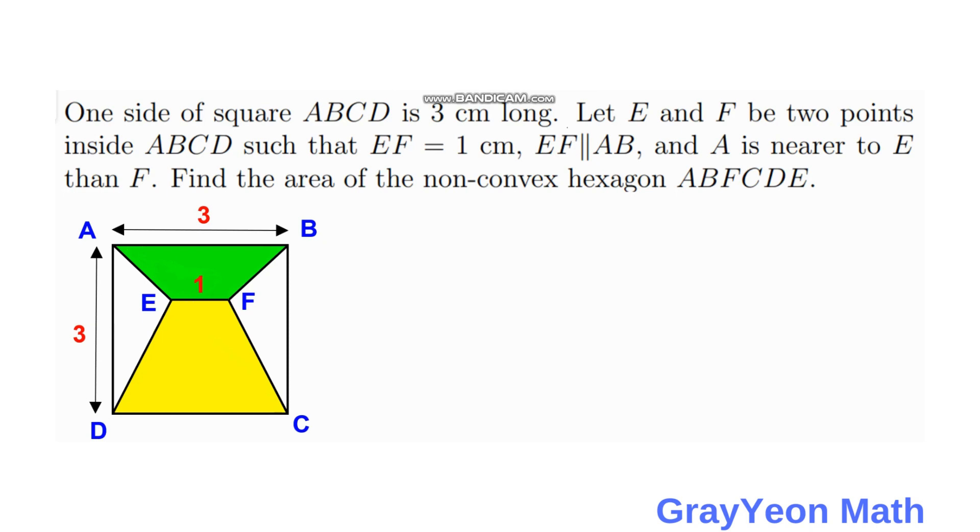One is green and the other is yellow. We clearly see that the bases are 3 and 1, and 3 also for the bigger trapezoid.